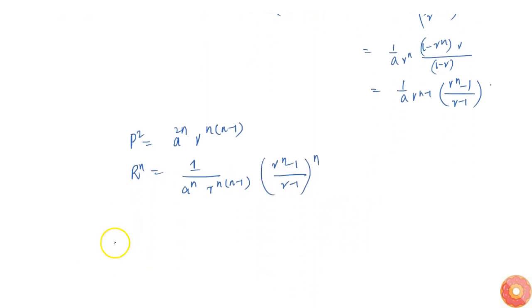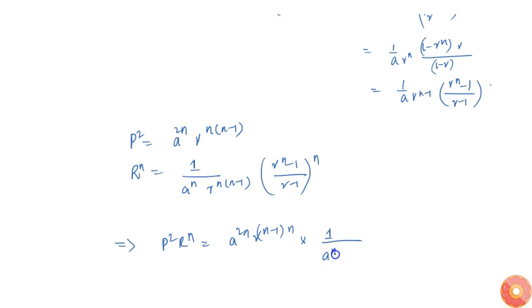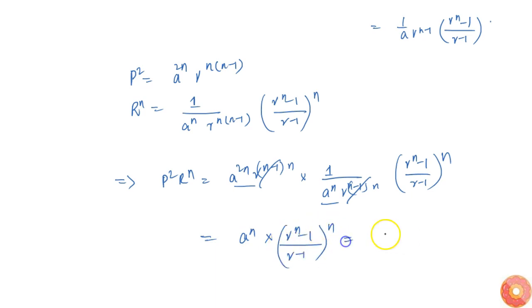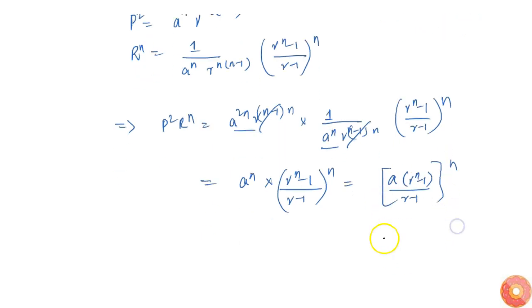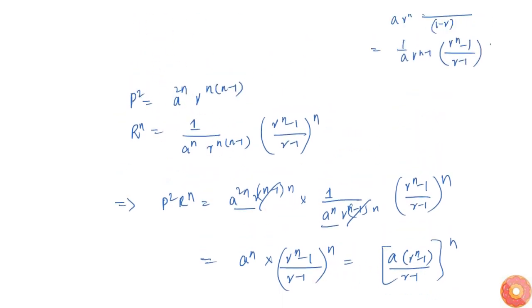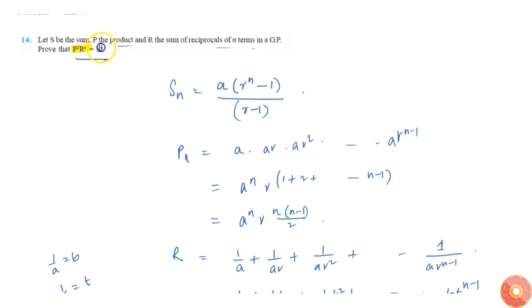Taking the product P squared times R power n: we get a power 2n times r power n(n minus 1) times 1 by a power n times r power n(n minus 1) times r power n minus 1 divided by r minus 1 whole power n. The r power n(n minus 1) terms cancel, and a power n remains, giving a power n times r power n minus 1 divided by r minus 1 whole power n, which equals a times r power n minus 1 divided by r minus 1 whole power n. This is exactly Sₙ power n, which is what we needed to show: P squared R power n equals S power n.